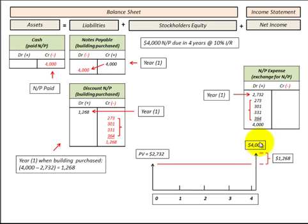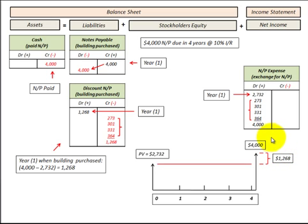That interest expense will be based on the future value of the notes payable at the end of the fourth year minus its present value. We get a value that has to be allocated to the interest expense. So let's look at the mechanics of deriving that interest expense for each year.